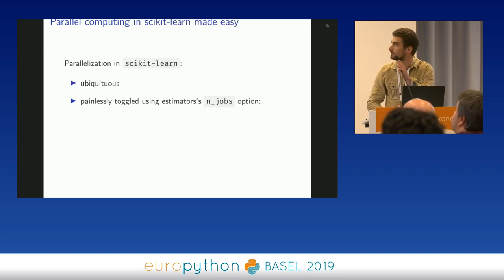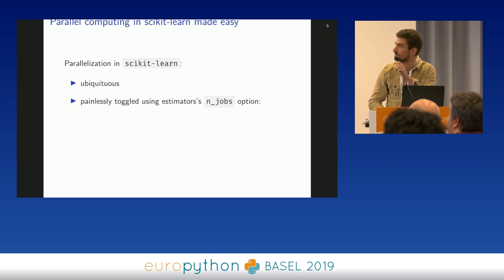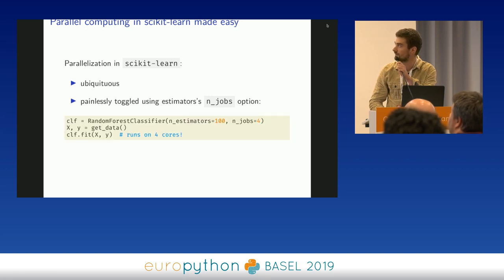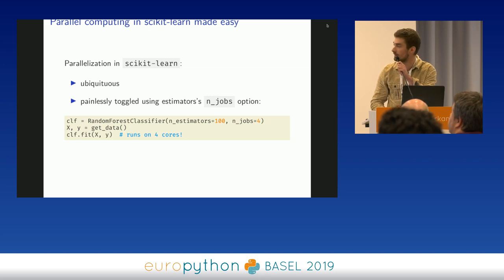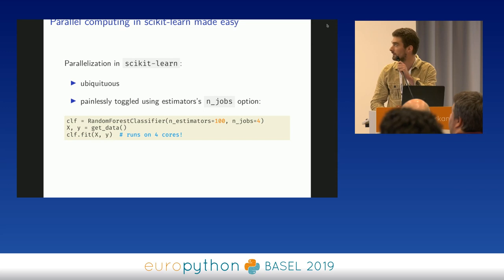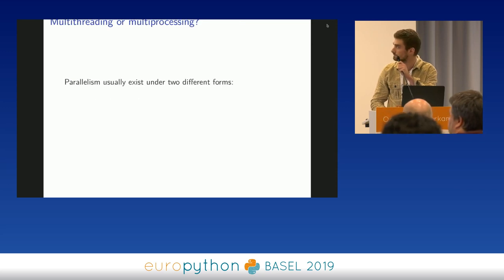As a conclusion: parallelization in scikit-learn is completely ubiquitous, and it's super easy to enable. For example, if you want to train a random forest classifier, you can train it on four cores simply by using the n_jobs parameter. It's a one-liner — super easy.